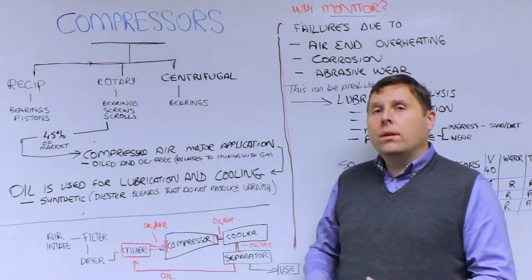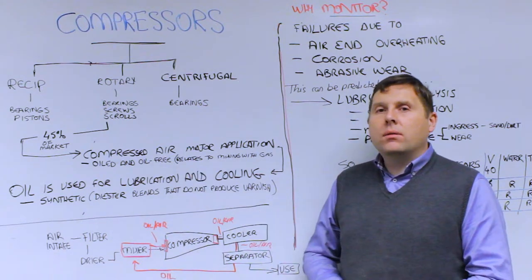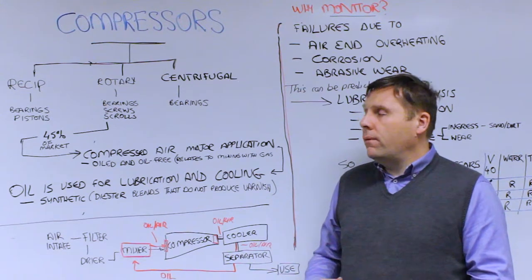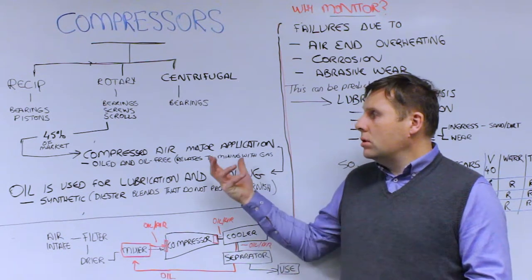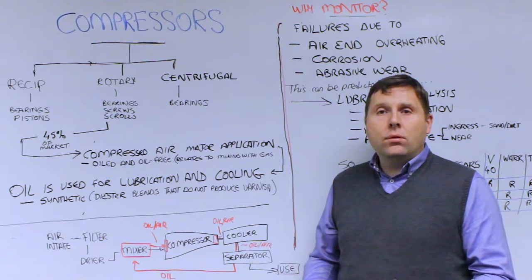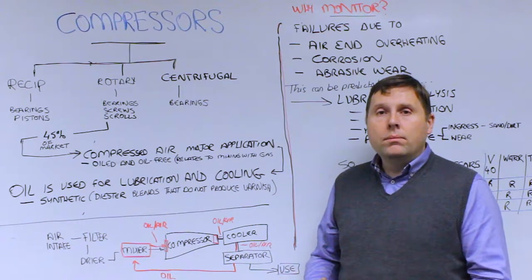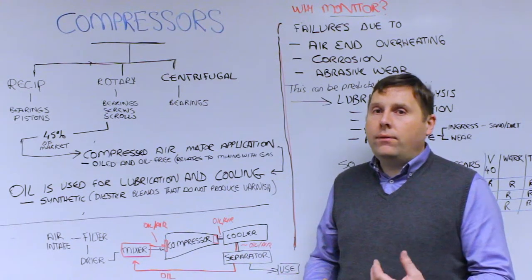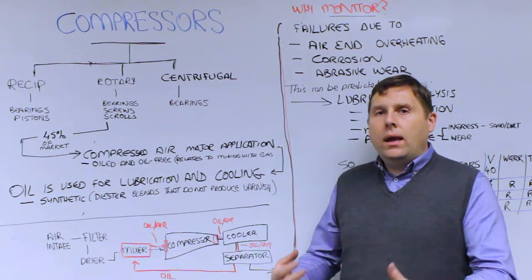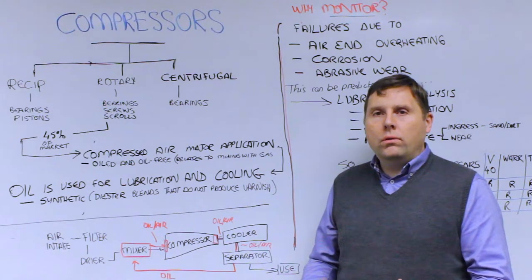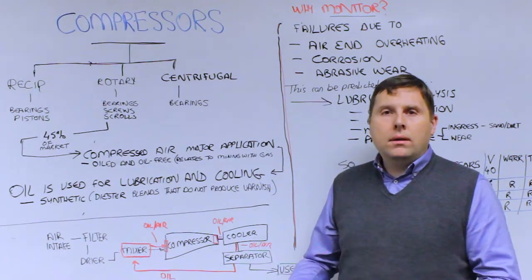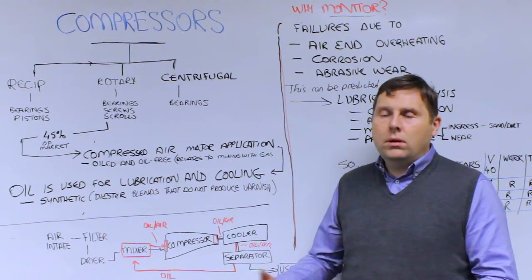We're going to focus mostly on the rotary because 45% of compressors that are sold into the industrial and fleet markets are for compressed air. Compressed air is the major application for compressors. It's considered the fourth utility after fuel, electricity, and water. And the big difference with the fourth utility is it's the one utility that end users have full control over. In other words, you produce the amount of air that's needed in order to power factories or various systems on fleet or industrial applications.